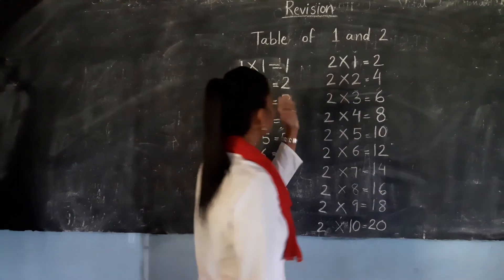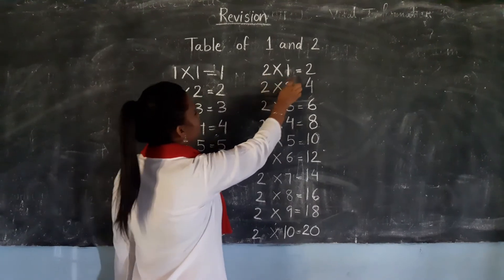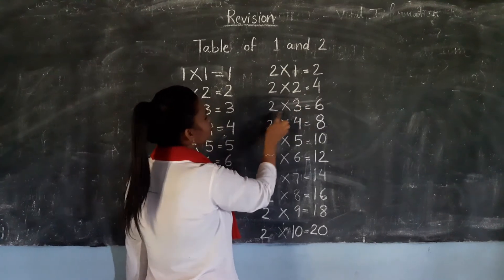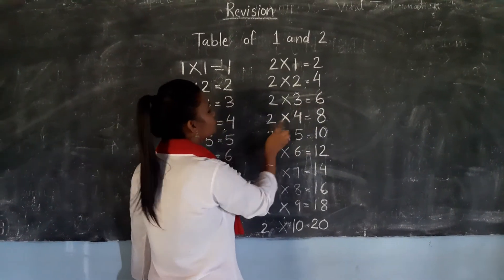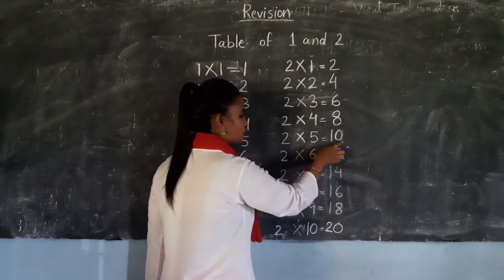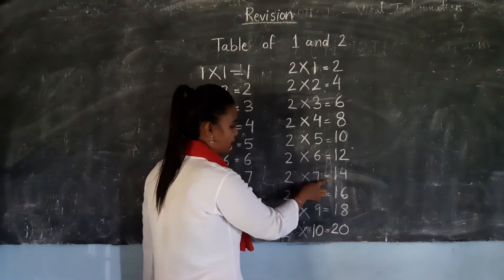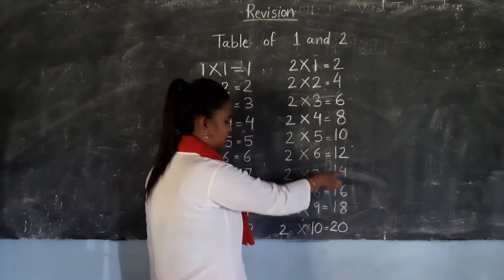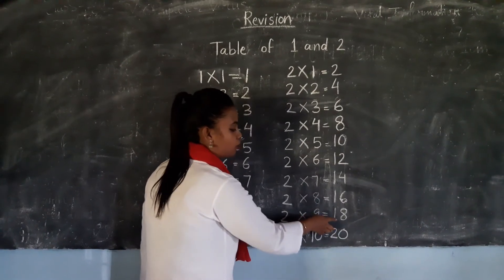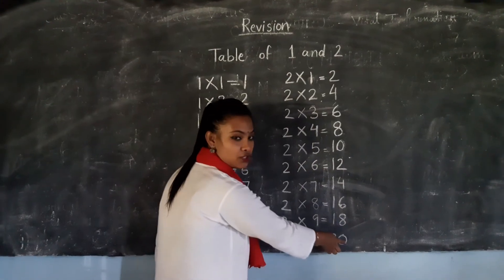So let's move to another. This is table of 2, okay? 2×1=2, 2×2=4, 2×3=6, 2×4=8, 2×5=10, 2×6=12, 2×7=14, 2×8=16, 2×9=18, and 2×10=20. Okay?